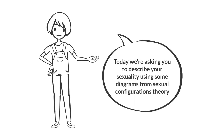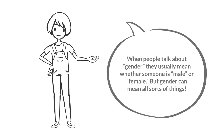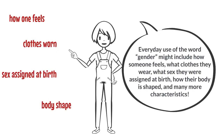Today we're asking you to describe your sexuality using some diagrams from sexual configurations theory. Something that might be important to your sexuality is the gender of the partners you're interested in. When people talk about gender, they usually mean whether someone is male or female, but gender can mean all sorts of things. Everyday use of the word gender might include how someone feels, what clothes they wear, what sex they were assigned at birth, how their body is shaped, and many more characteristics.